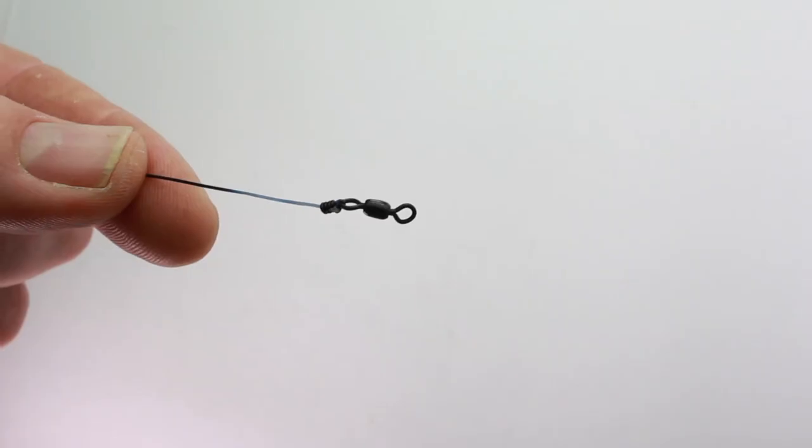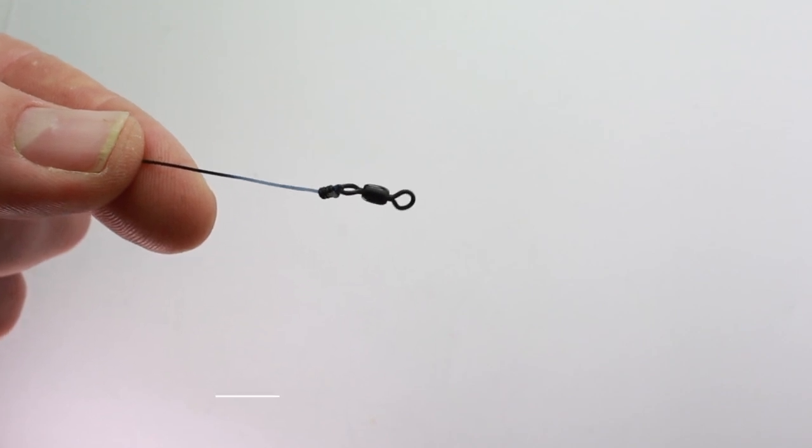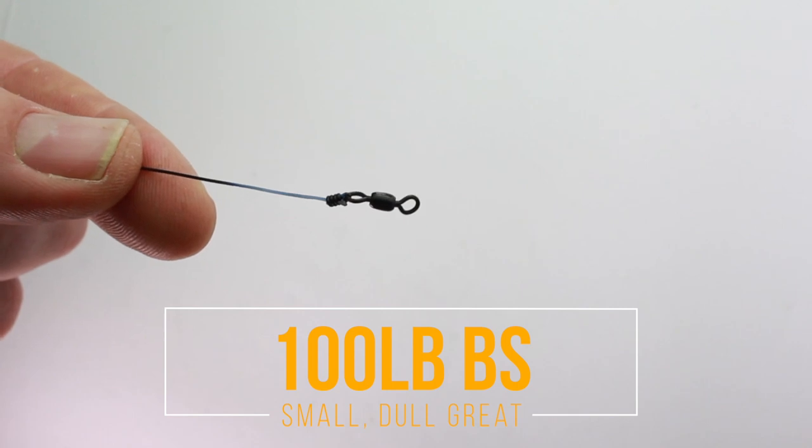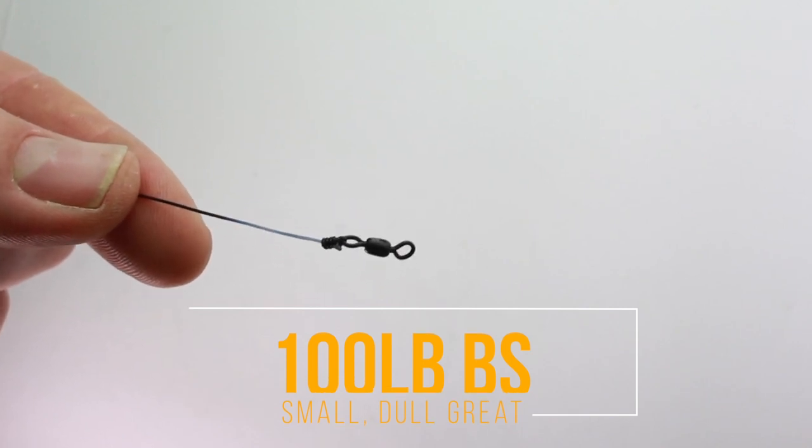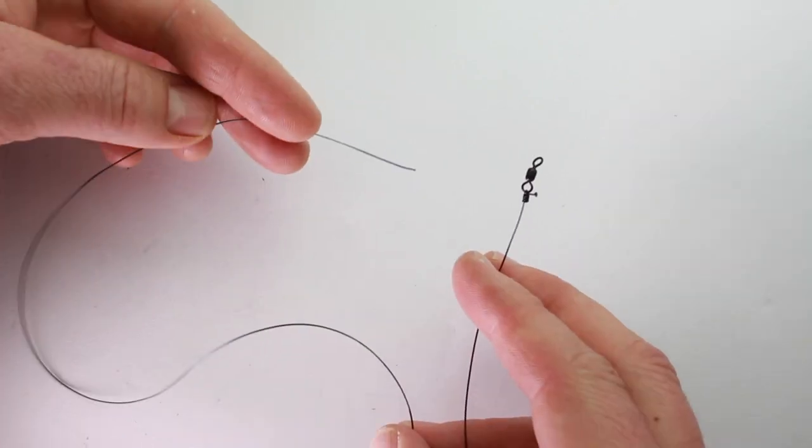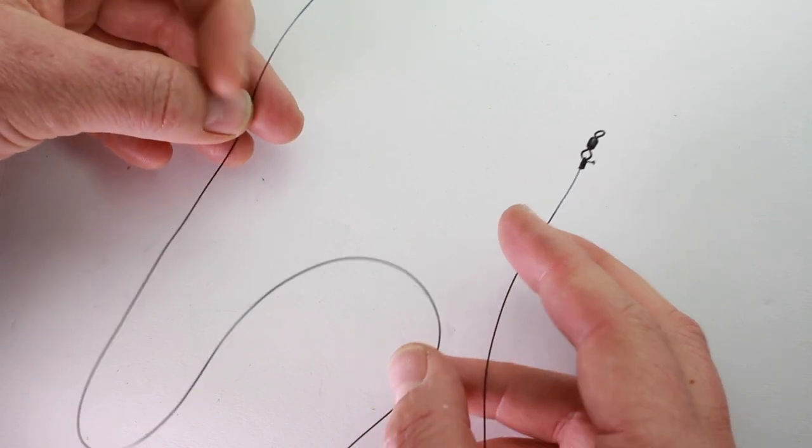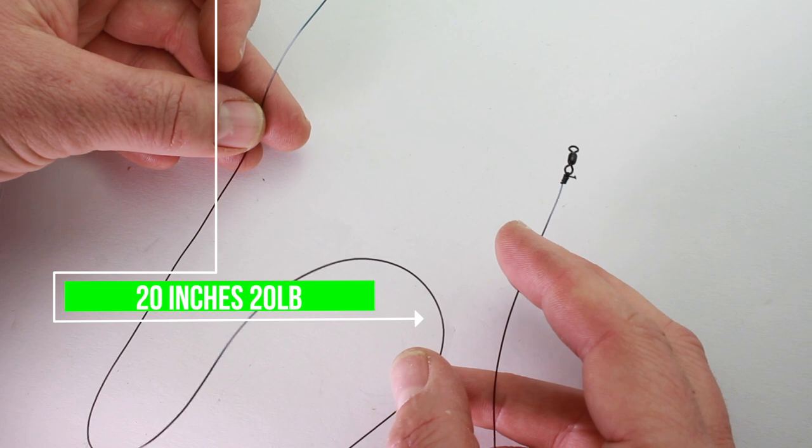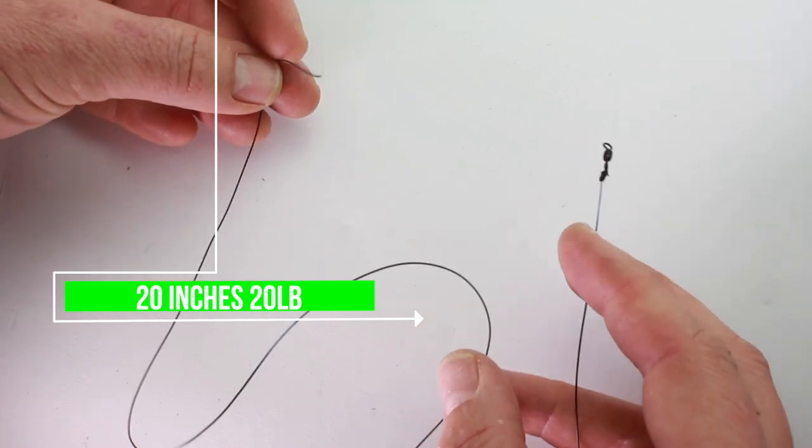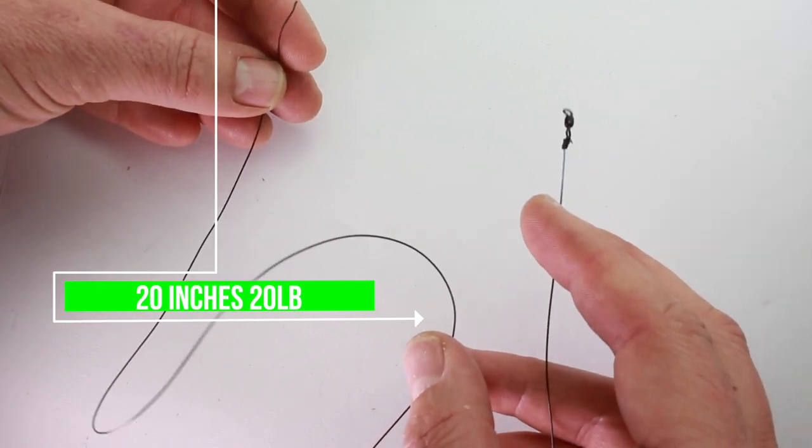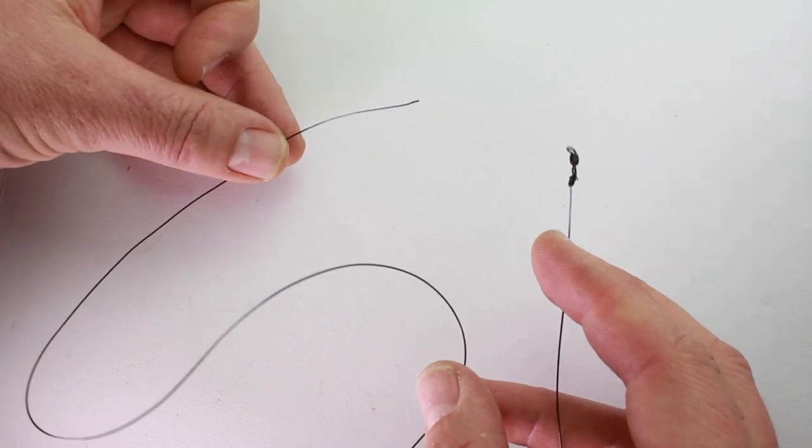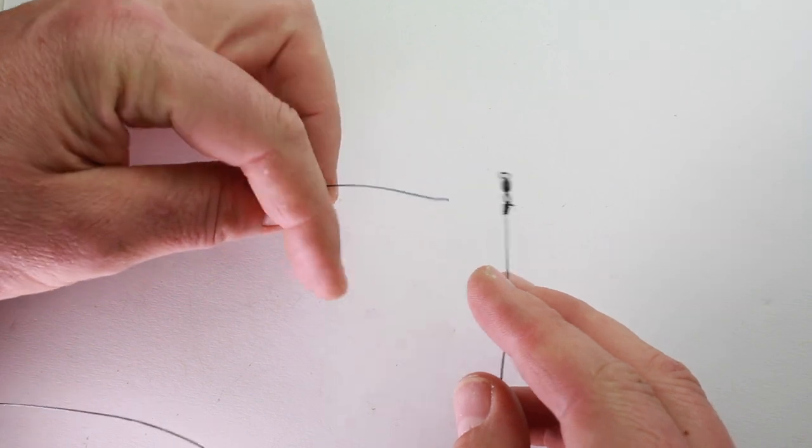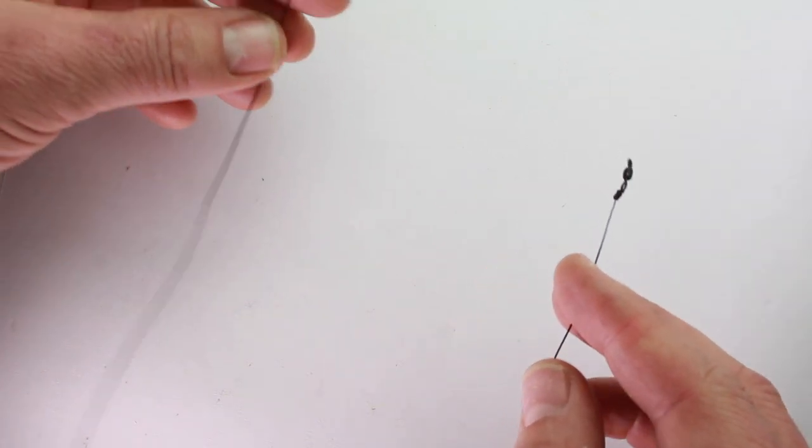We're not using too much terminal tackle on this one, just a couple of swivels. These are 100-pound ones, super small but also very strong, and they're black as well, not too shiny. In front of me here, I've taken about 20 inches or so—you can vary that depending on the sort of bottom that you're fishing over—of 20-pound breaking strain line with the swivel on one end.